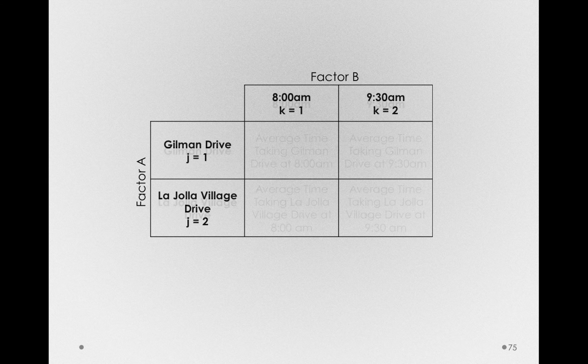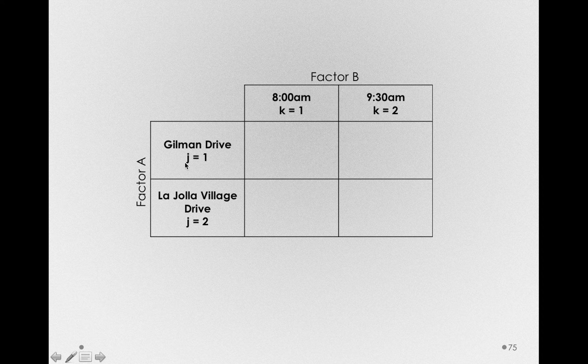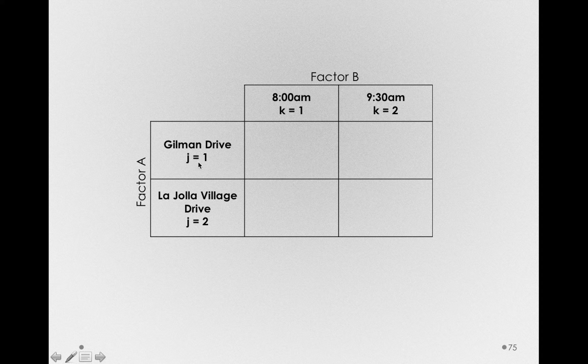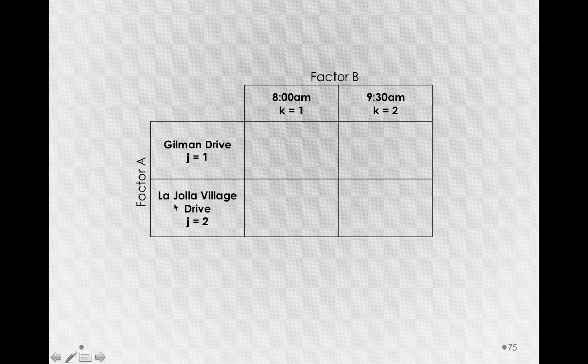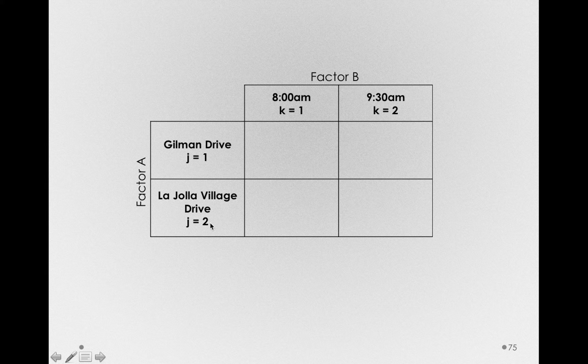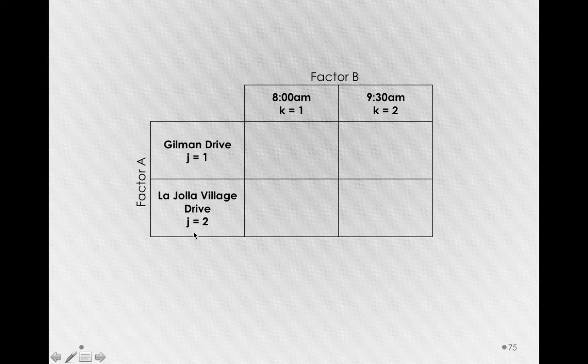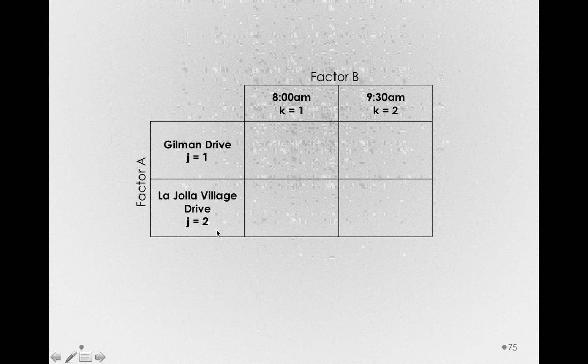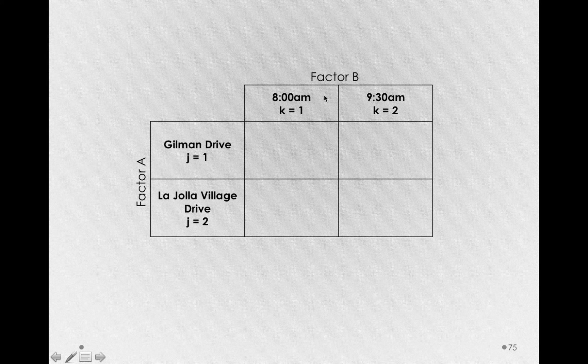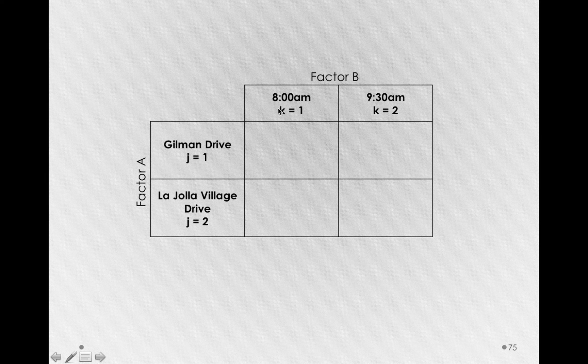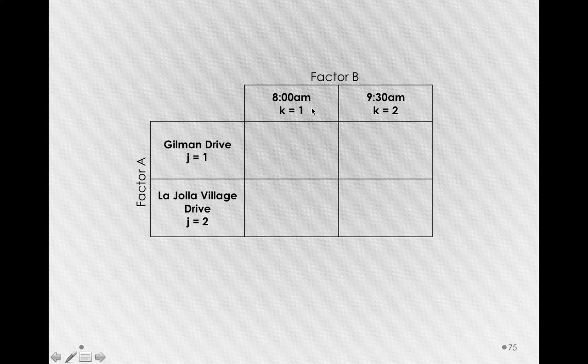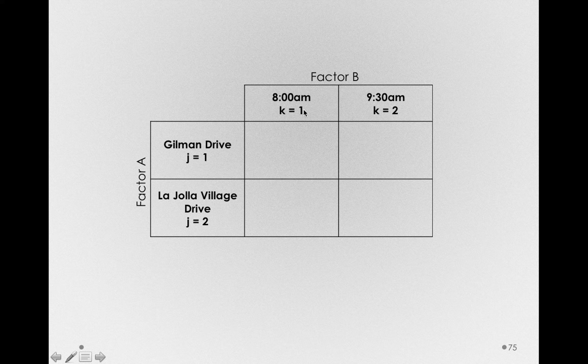Let's start with some notation. For factor A, Gilman Drive is the first level, so j equals one for Gilman Drive. La Jolla Village Drive is the second level of factor A, so every term in La Jolla Village Drive will have j equals two. Similarly, in factor B, the first level is k equals one, so any term involving 8 a.m. will have one for the kth value.